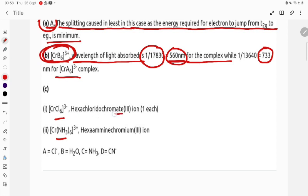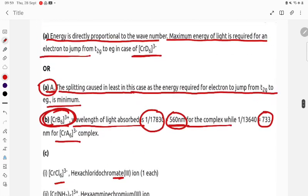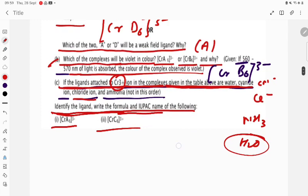And here is hexaammine chromium(III) ion. So A is Cl⁻, B is H2O, C is NH3, D is CN⁻. So this is the answer of the question, student.